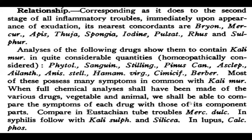Comparing Eustachian tube troubles: Merc Dulcis is already known as important for earache troubles along with Kali Muri, and you can think of Merc Dulcis alongside Kali Muri in biochemics. In syphilis, follow with Kali Sulph and Silicea — though nowadays syphilis cases are fewer due to antibiotics. In lupus, a tuberculosis of the skin, one must think of Calcarea Phos along with Kali Muri.